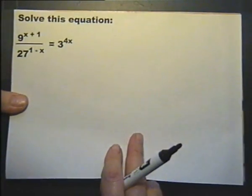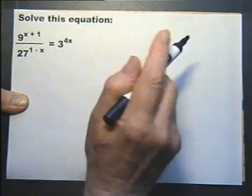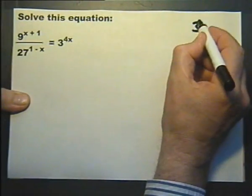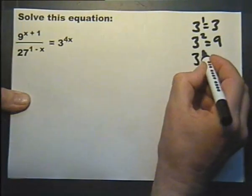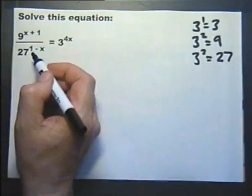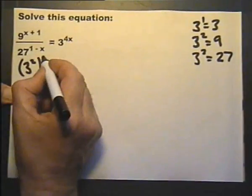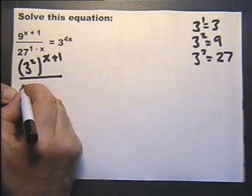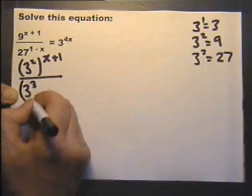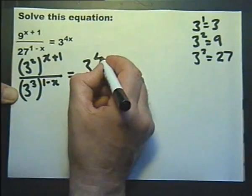So let's have a go at solving this equation. We need to spot that 9 and 27 can be written as powers of 3: 3 to the power of 1 is 3, 3 to the power of 2 — 3 squared — is 9, and 3 to the power of 3 — 3 cubed — is 27. So we can rewrite this: instead of 9, we write 3 squared raised to the power of (x plus 1), over instead of 27, we write 3 cubed raised to the power of (1 minus x), and that equals 3 to the power of 4x.